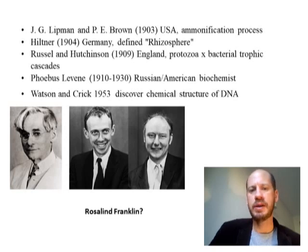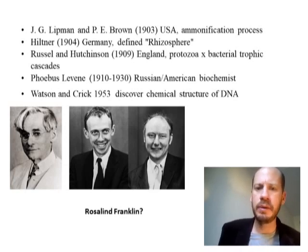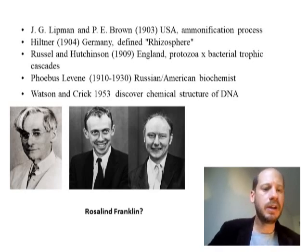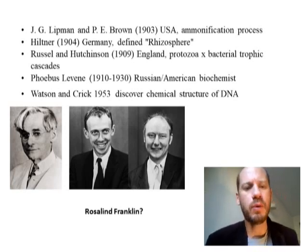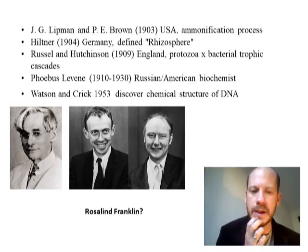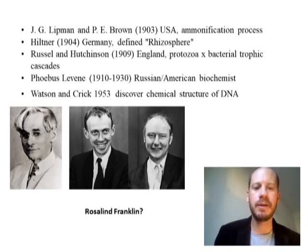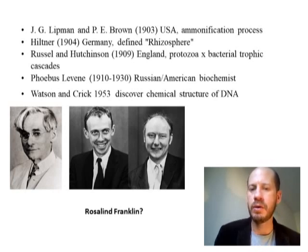Between 1910 and 1930, we have very important contributions from Phoebus Levene. He was working on describing DNA. He didn't arrive at the right structure — he was proposing a tetranucleotide structure, which was not correct — but he made many important advances in understanding its components. He identified the phosphate, the sugar, and the bases, as well as the order in which they were arranged in DNA and RNA.